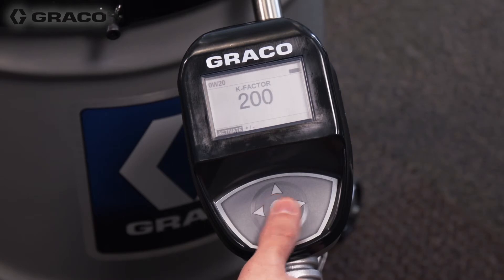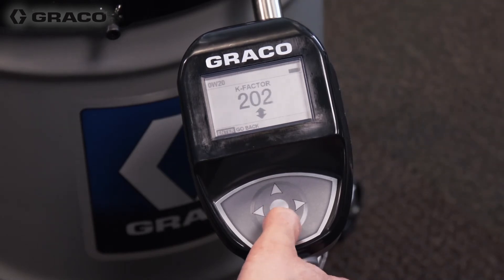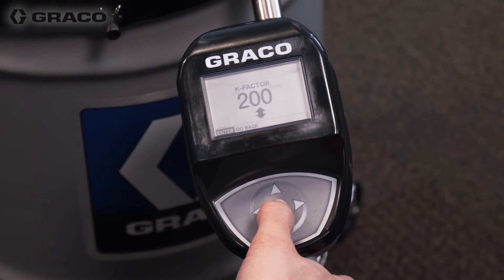If needed, the K factor is adjusted by first selecting the plus minus and then using the up and down arrows. After adjustments to the K factor are complete, press the center Enter button on the keypad to select Enter and save the new calibration factor.